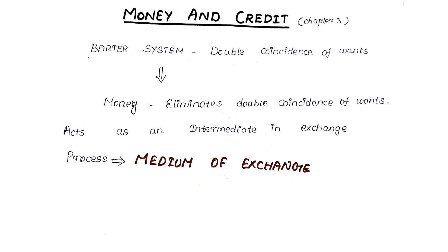Hello Friends. This is 10th Economics NCERT Chapter 3: Money and Credit. If you have any doubts about this lesson, you can join the link in the description for the Telegram group. If you have any doubts, you can click on the comment or send me a mail ID.